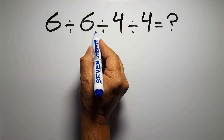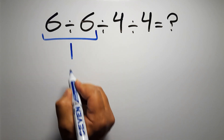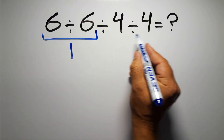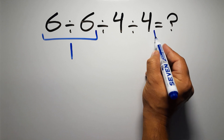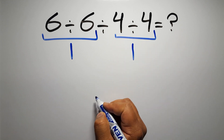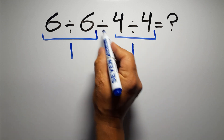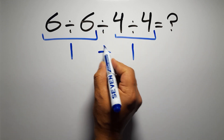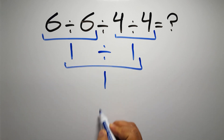6 divided by 6 gives us 1, and here we have 4 divided by 4, which equals 1, so 1 divided by 1 gives us 1.